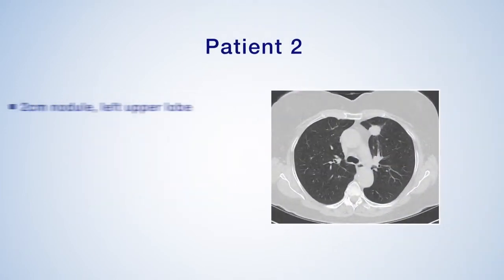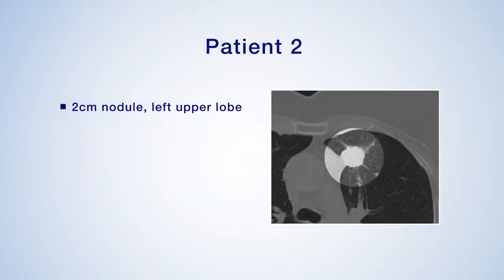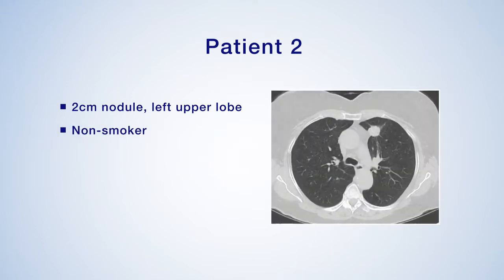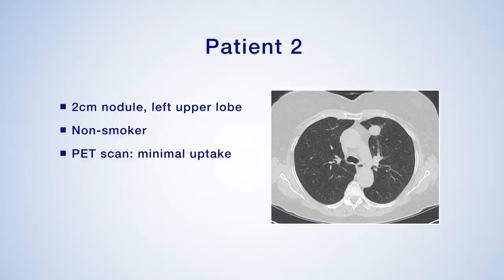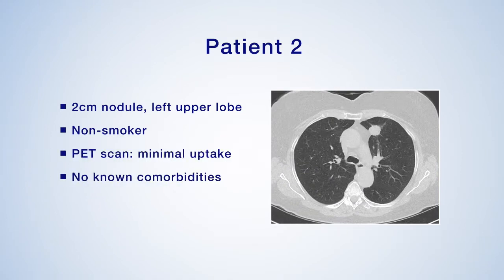Another patient presents with a 2-centimeter nodule on the left upper lobe that has grown from 1.5 centimeters on a chest CT scan performed approximately six months ago. The patient is a lifelong non-smoker, and PET scan shows minimal uptake in the nodule without evidence of disease elsewhere. The patient was otherwise healthy and was seen in conjunction with a thoracic surgeon who requested a biopsy for tissue diagnosis prior to consideration of surgery.